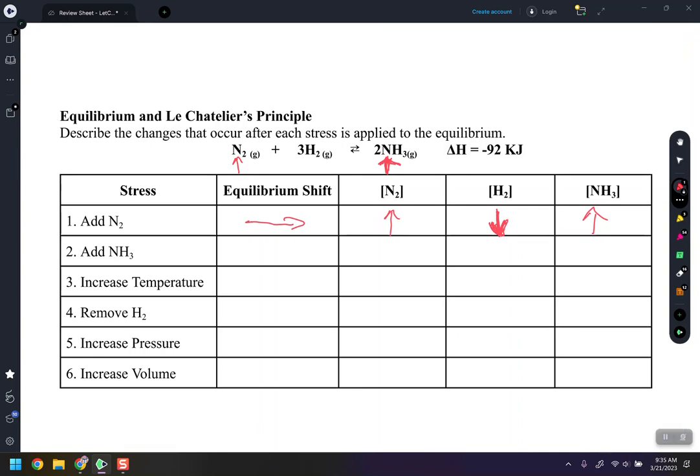So when you add a reactant, the reaction will shift in the opposite direction, meaning towards the products, in that direction to make more product to use up what they just added. So that's the first one.